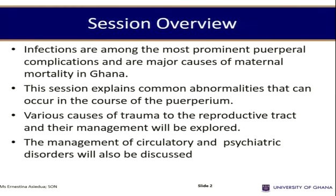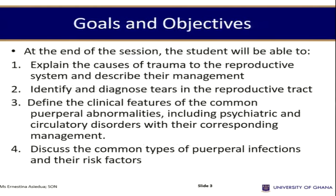Infections can also lead to postpartum hemorrhage during the puerperium. This section will explain common abnormalities that can occur during the puerperium, causes of trauma to the reproductive tract and their management, and circulatory and psychiatric disorders. By the end, students should be able to explain causes of trauma to the reproductive system, diagnose tests in the reproductive tract, and define clinical features of common puerperal abnormalities including psychiatric ones.